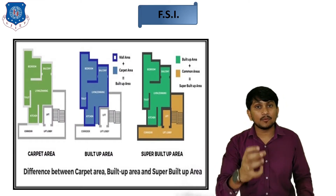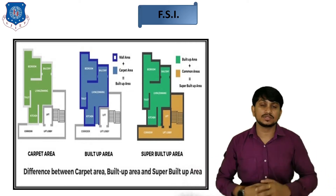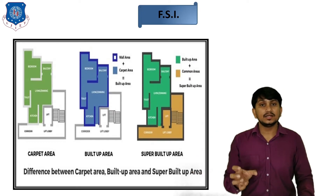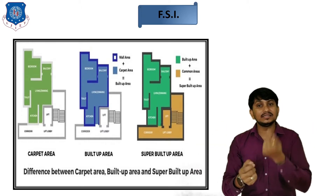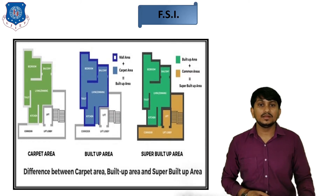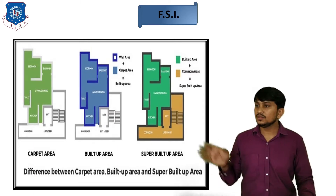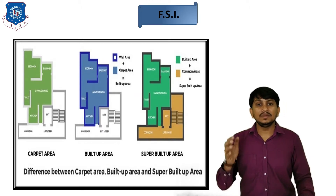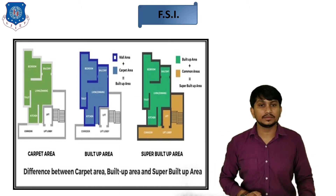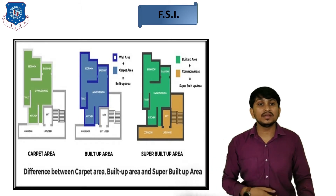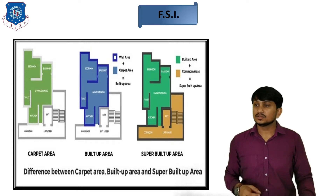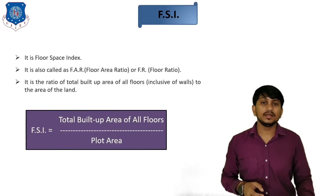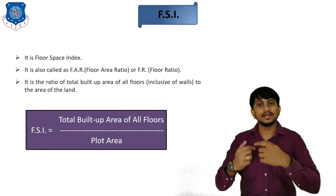Carpet area is the area where you can lay your carpet in the house. Built-up area is carpet area plus the wall area — if you add the thickness of the walls to the carpet area, you get the built-up area. Super built-up area is the built-up area plus the common areas of the building, like lobbies, common garden, stairs, and lifts. In FSI, built-up area of all floors is divided by the plot area. FSI is the ratio of the area of the floor to the area of the plot.